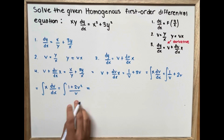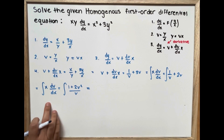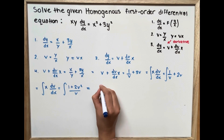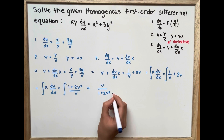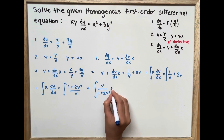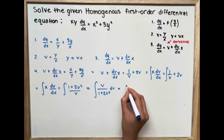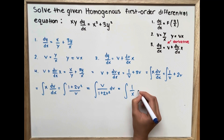Now we move all v terms to the left side and x terms to the right side. We set up the integrals: the integral of v over (1 plus 2v squared) dv equals the integral of 1 over x dx.